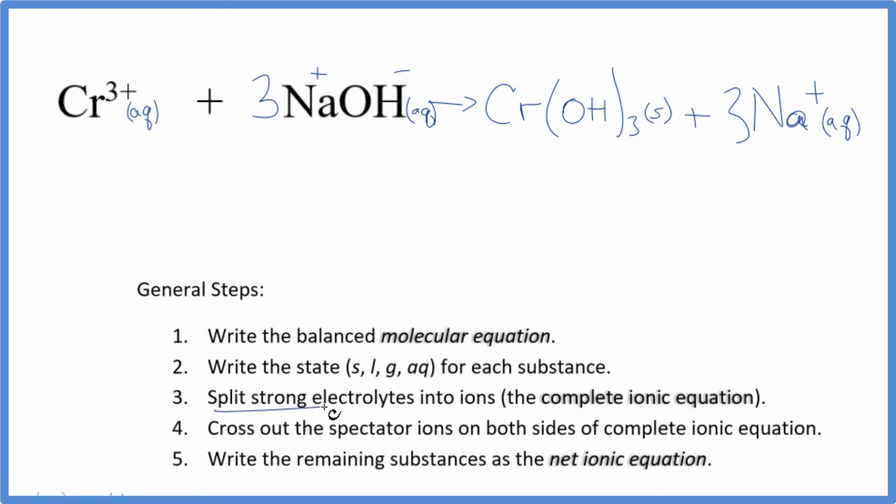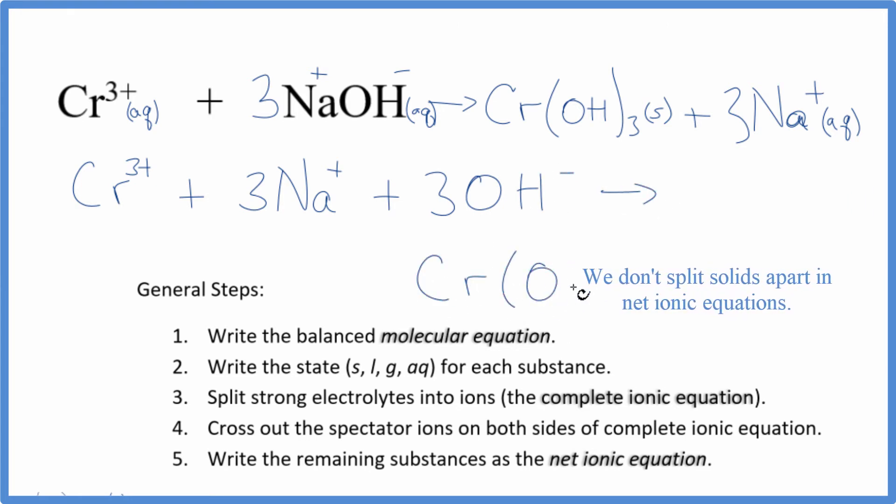Now we can split the strong electrolytes into their ions, and that'll give us the complete ionic equation. So Cr³⁺, that's already broken down, and I'll write aqueous at the end. Plus we have three sodium ions. Sodium's in group one, so it has a positive charge. Three of these hydroxide ions, and those are the reactants. And we end up with this chromium three hydroxide, which is a solid, plus three sodium ions. At this point, this is the total or complete ionic equation.